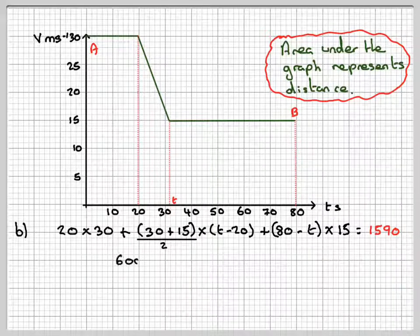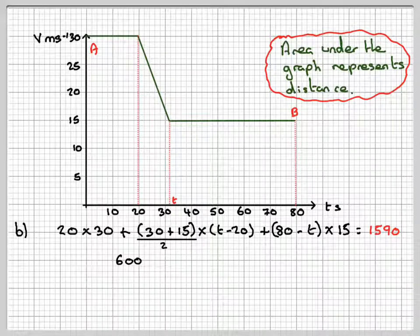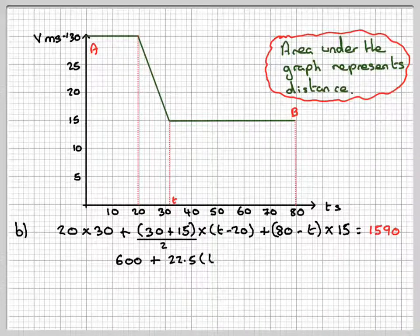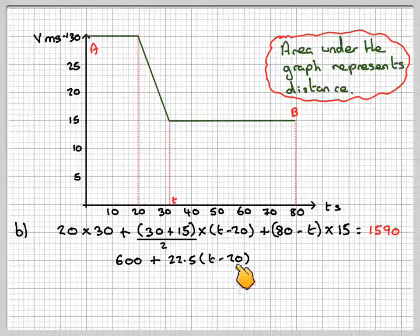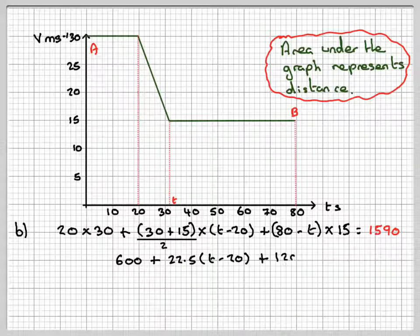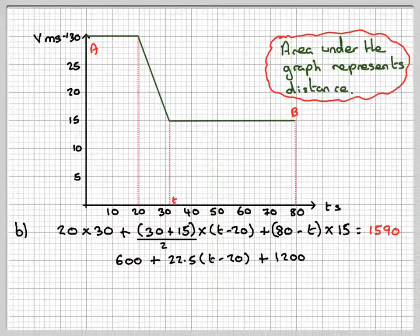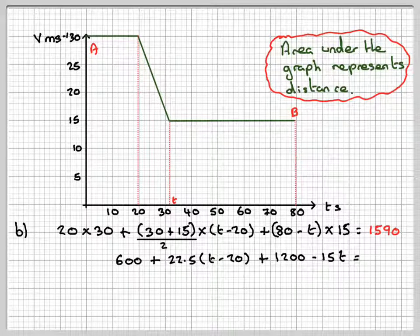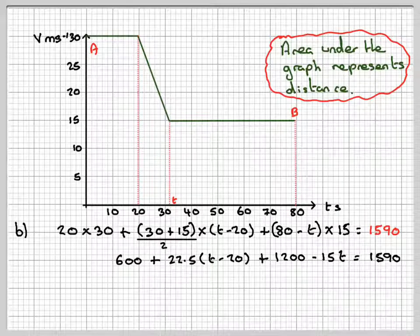20 times 30 is 600. 30 plus 15 over 2 gives me 22.5. Still going to multiply it by T minus 20 plus 80 minus T. 15 times 80 which is 1200 minus 15T is equal to 1590.